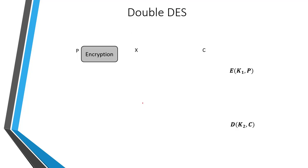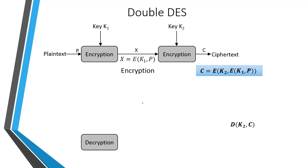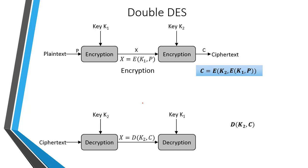In Double DES, first on the plain text, encryption is performed using key K1, and the output is X. On that output, further DES encryption is performed using key K2, and the ciphertext is generated. Decryption is performed in reverse order: the ciphertext is decrypted using key K2 to generate X, and X is then decrypted using key K1 to generate the plain text. The keys are used in reverse order during decryption.